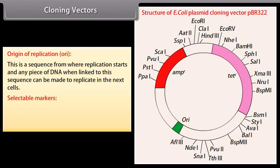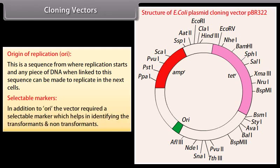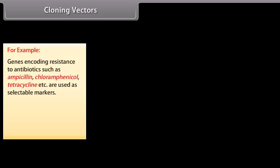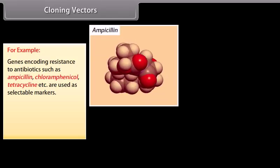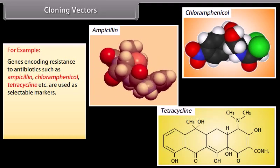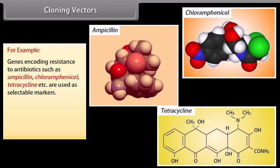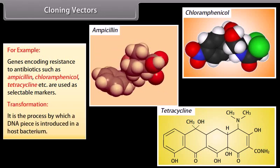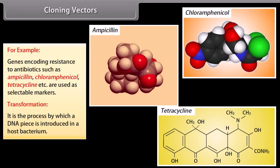Selectable markers: in addition to the origin of replication, the vector requires a selectable marker which helps in identifying the transformants and non-transformants. For example, genes encoding resistance to antibiotics such as ampicillin, chloramphenicol, tetracycline, etc., are used as selectable markers. Transformation is a process by which a DNA piece is introduced into a host bacterium.